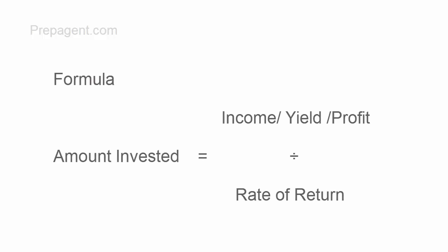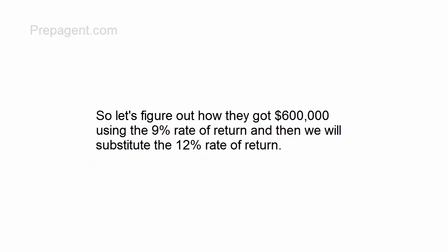So here's the formula. Amount invested equals the annual income divided by the rate of return. Let's figure out how they got the $600,000 invested using the 9% rate of return and then we'll substitute the 12% rate of return.